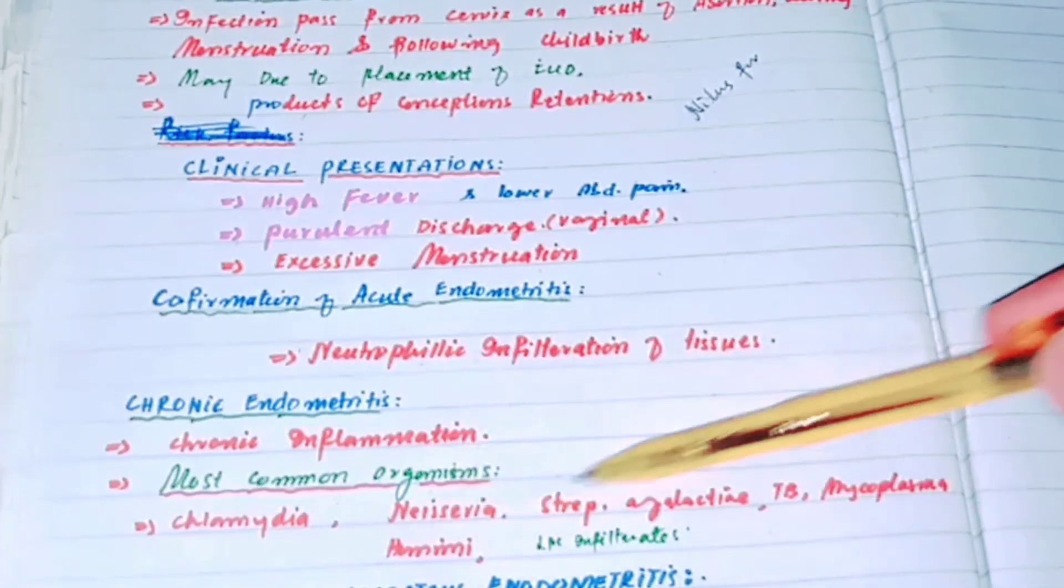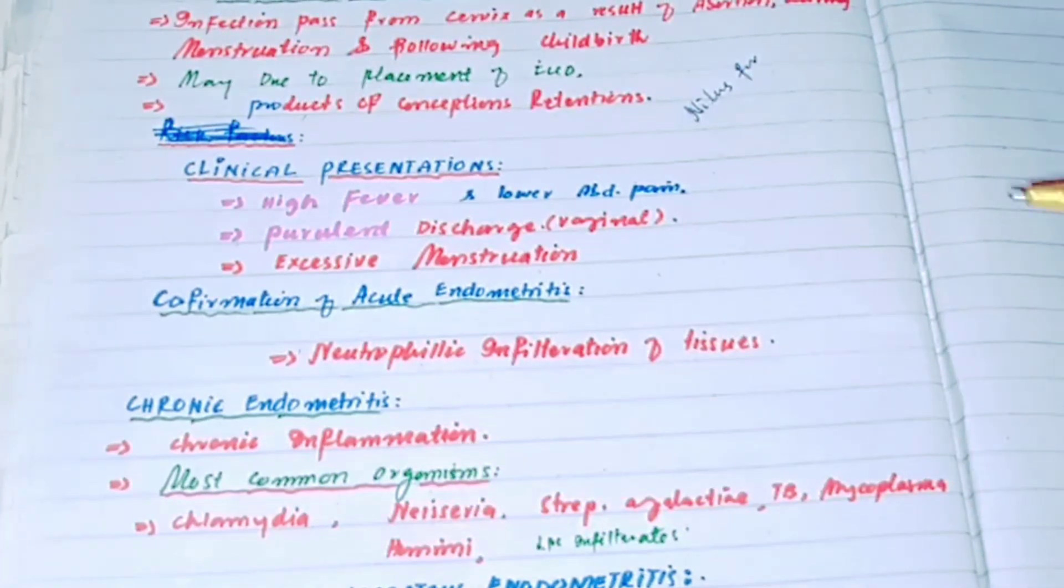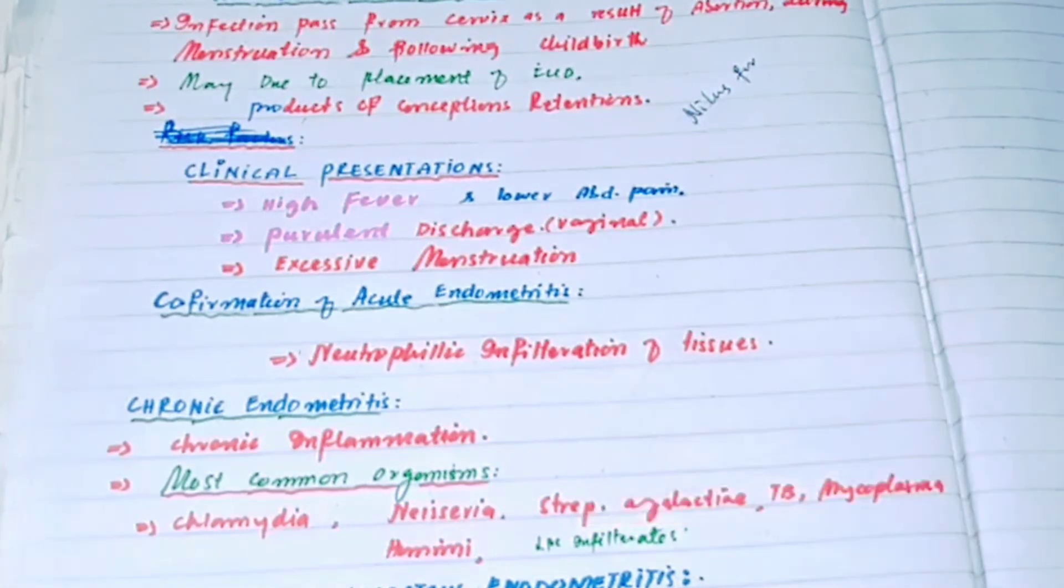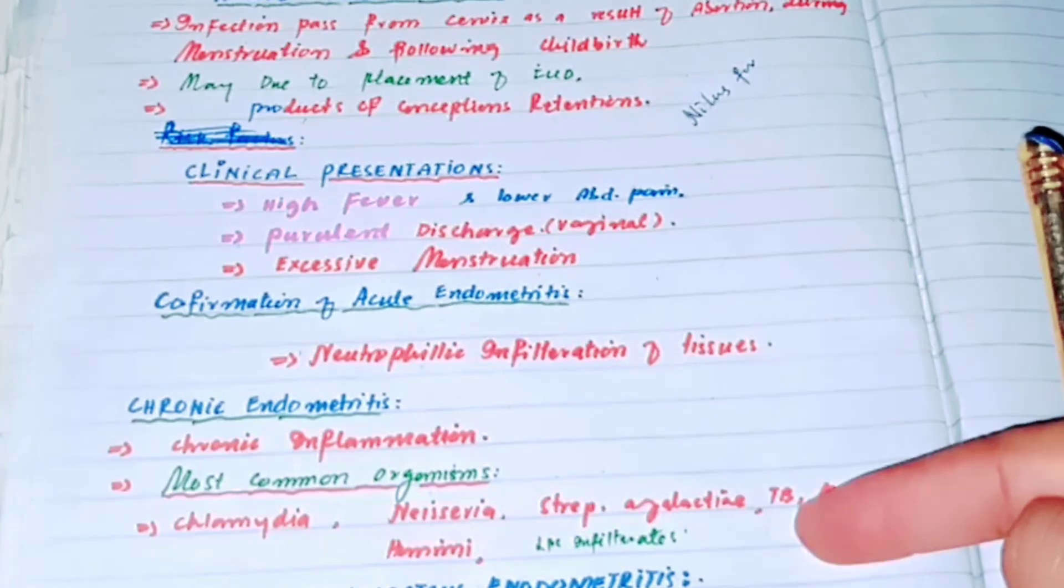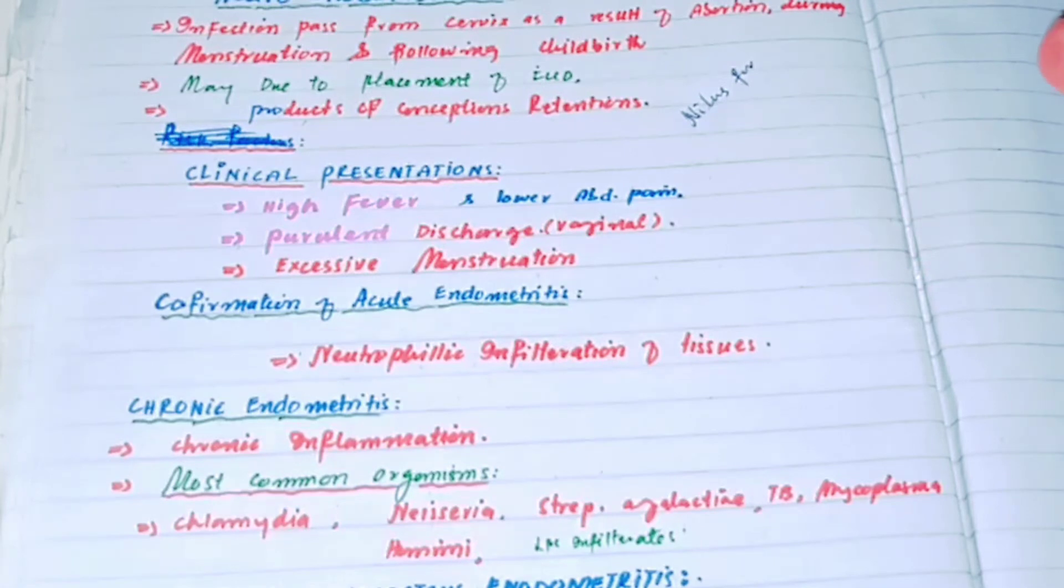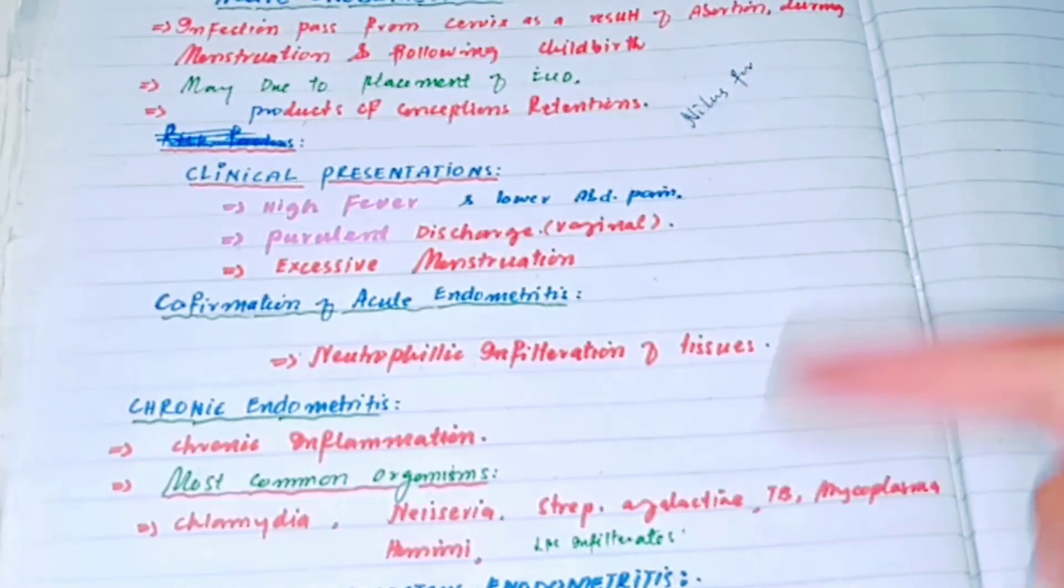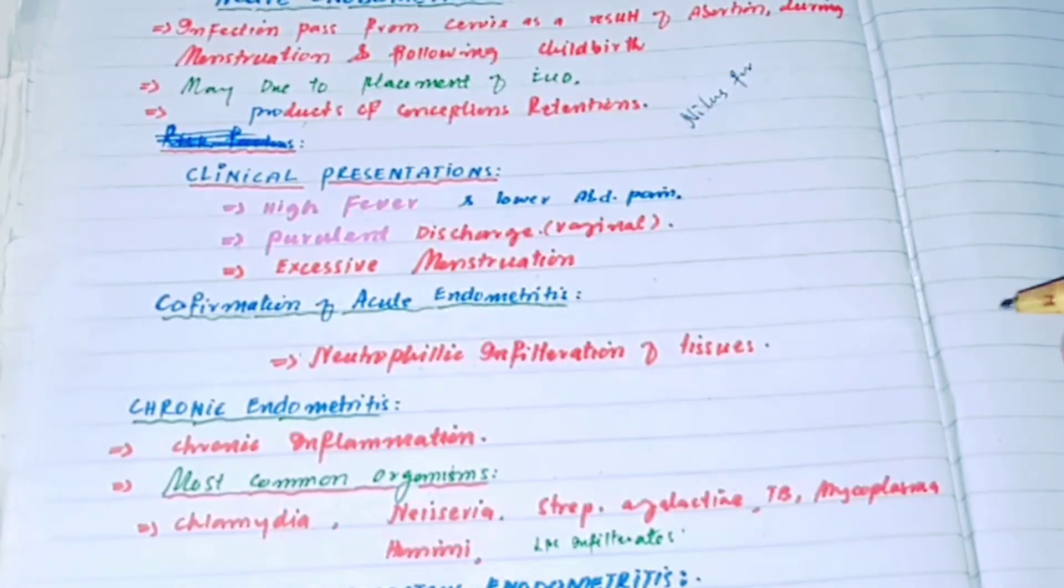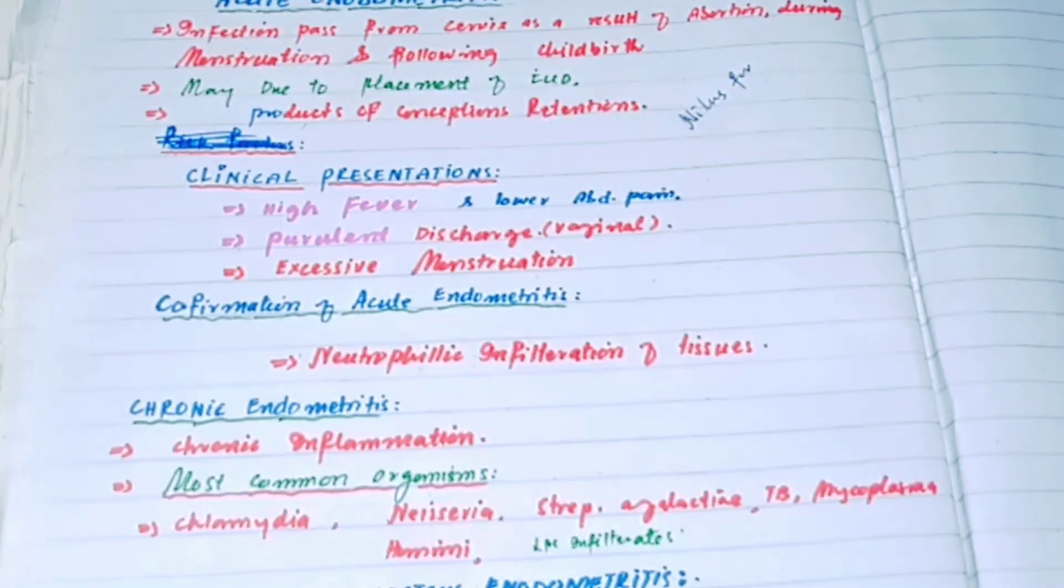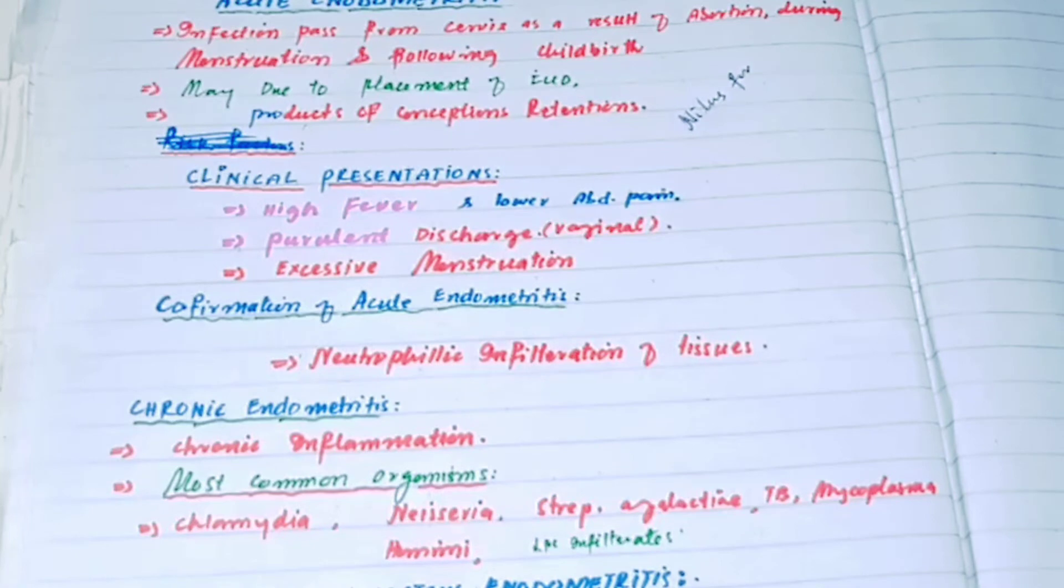How to confirm chronic endometriosis? The examination will reveal lymphoplasmacytic infiltrate as well as plasma cells. Mainly the plasma cells will confirm chronic endometriosis. Lymphocytes may be present in normal conditions, so the presence of plasma cells on microscopic examination will confirm chronic endometriosis.